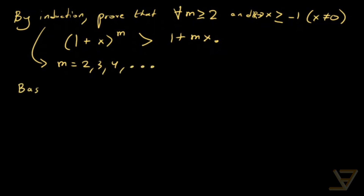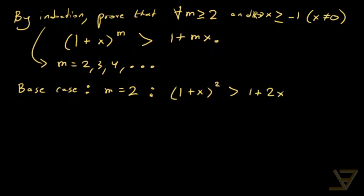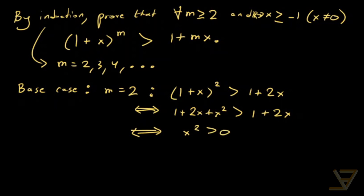Let's take care of the base case, where m equals two. In this case, we have one plus x squared is greater than one plus two x. Working backwards: one plus two x plus x squared is greater than one plus two x, which is equivalent to x squared is greater than zero. And this is true because x is not zero by assumption. So that takes care of the base case.